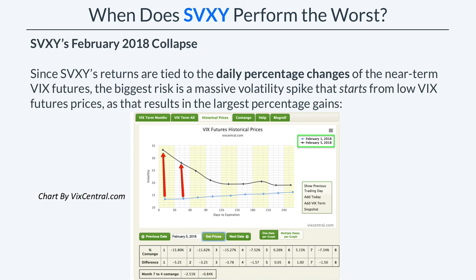Looking at February 2018 specifically: on February 1st, the near-term VIX Futures prices were below 15, and on February 5th, the first-month VIX Futures price was almost at 35, and the second-month VIX Futures was just below 30. We saw a massive increase in near-term VIX Futures prices that started from a very low original point, leading to a huge percentage gain on those near-term VIX Futures, which led to a disastrous loss in SVXY.